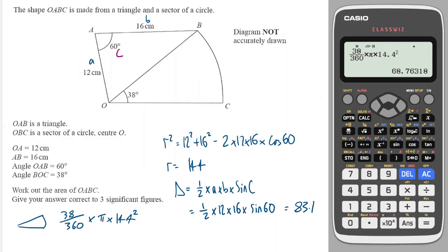and I get sorry, 68.8. So the total area is the 83.1 plus the 68.8. And we get 152 to three significant figures.